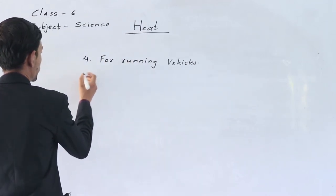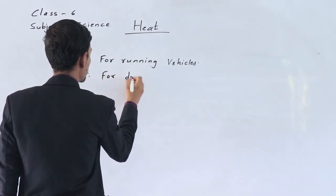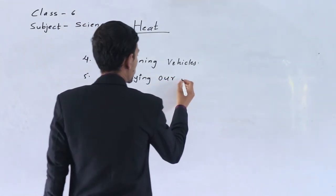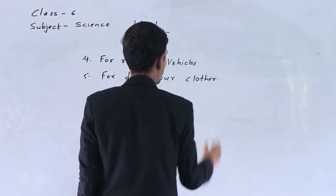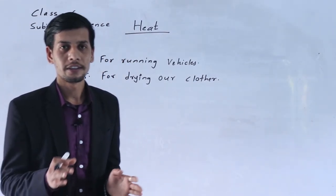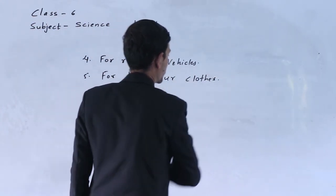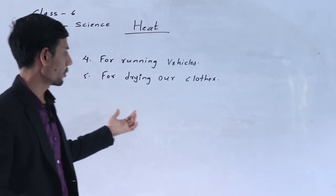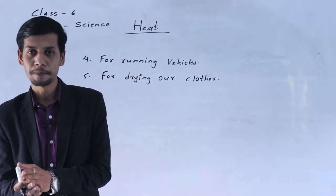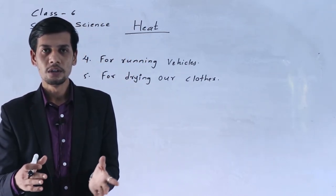The next use of heat energy is for drying our clothes. We use heat energy to dry our wet clothes. For this purpose we mainly use sunlight, which is a source of heat energy.